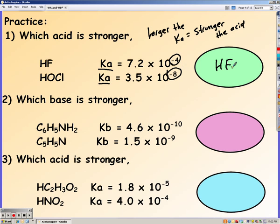Go ahead and pause the video and try 2 and 3 on your own. So for number 2, we're looking at the base, see which base is stronger. That's why we have Kb instead of Ka. Negative 9 is bigger than negative 10, and so C5H5N is the stronger base.